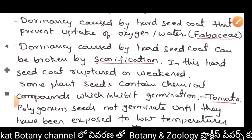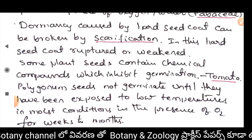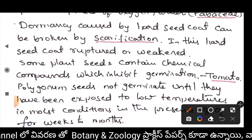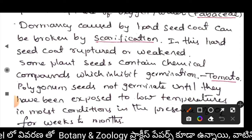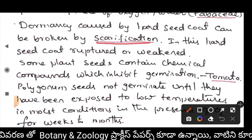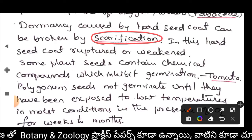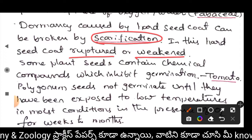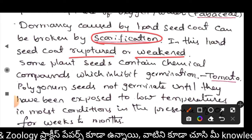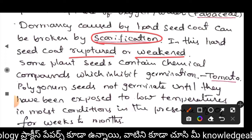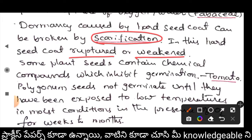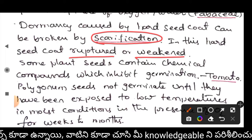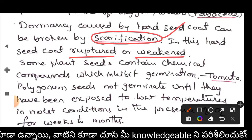Dormancy caused by a hard seed coat can be broken by scarification. Scarification is the process by which the hard seed coat is ruptured or weakened. By rupturing or weakening the seed coat through scarification, the dormancy condition is removed.